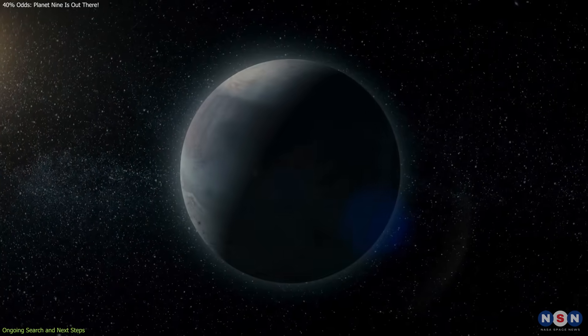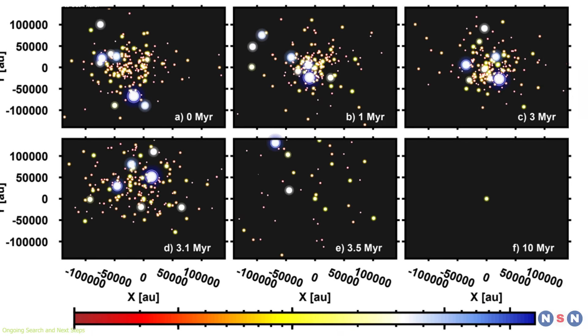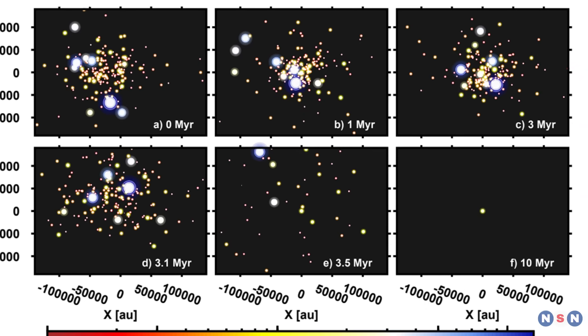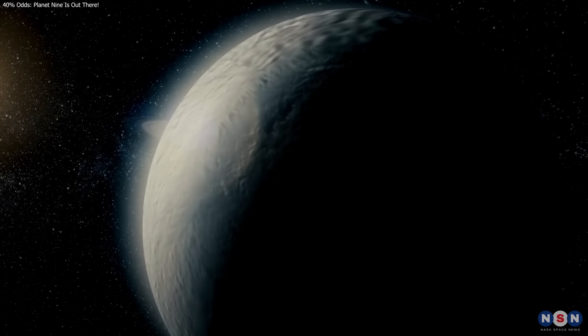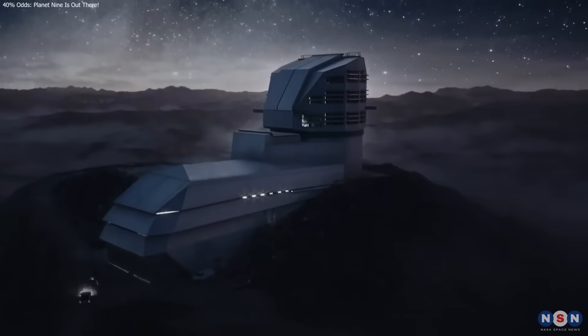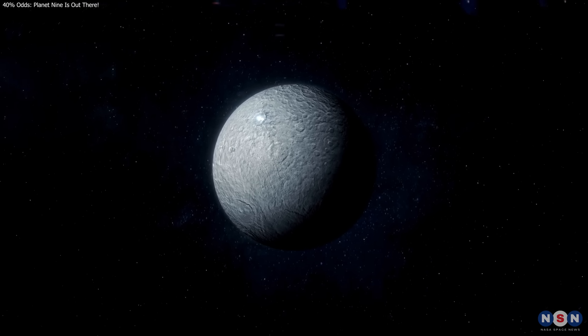Planet 9 is still unconfirmed. But new simulations show it could naturally form in systems like ours. With a 40% probability and growing support from orbital clues and upcoming tools like the Rubin Observatory, the theory is gaining ground.